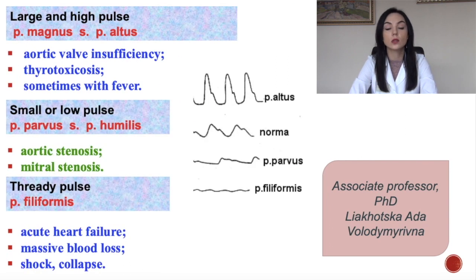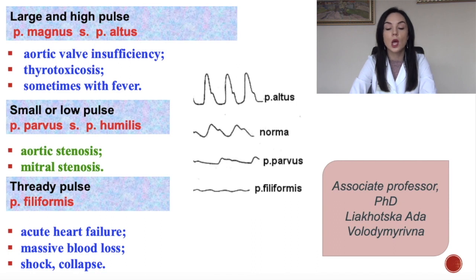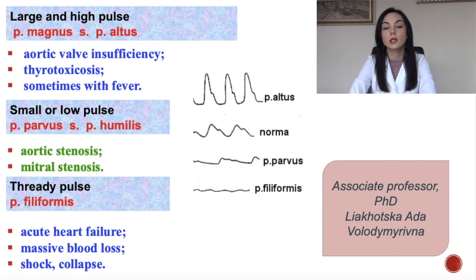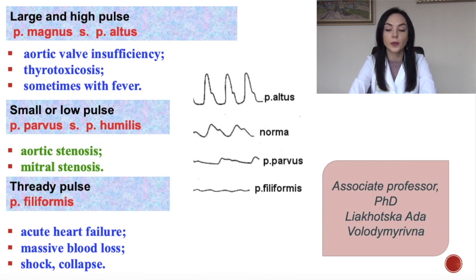Large and high pulse is called pulsus magnus. At the picture you can see a sphygmogram that shows the different variants of pulse.